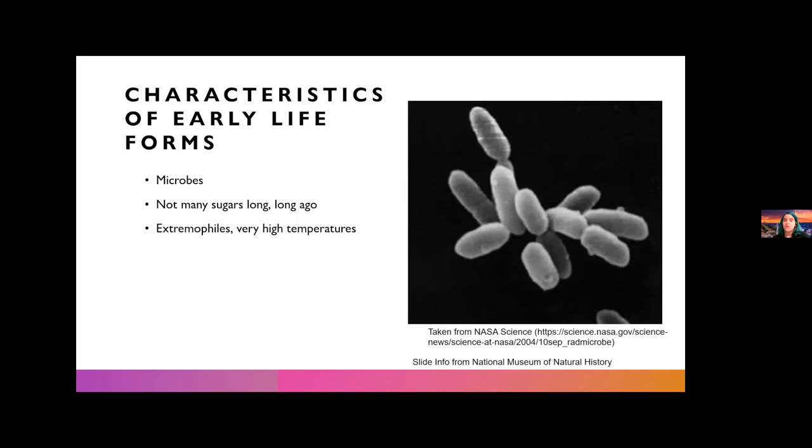Also, much of early life was extremophilic because early Earth had very odd conditions, very different from what we know now. For example, it had very high temperatures, very low oxygen, and high methane. So in general, early life functioned in an entirely different way than how we do now. It's similar because we're related, but many of its processes looked very different.